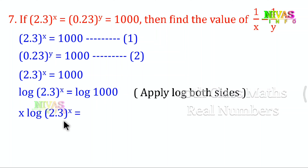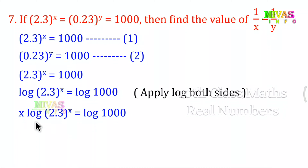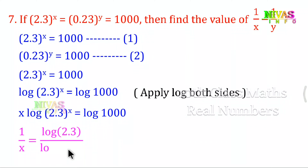So x into log 2.3 is equal to log 1000. The exponent comes down. Rearranging: 1 by x is equal to log 2.3 by log 1000.